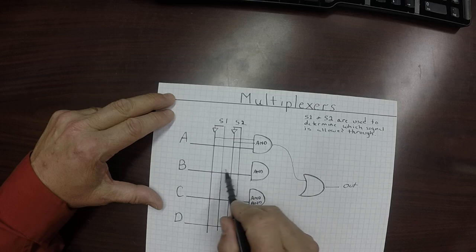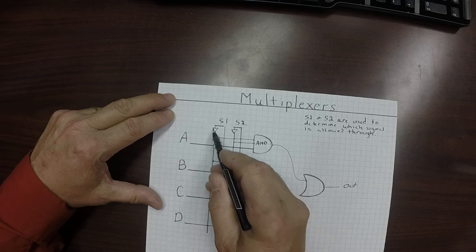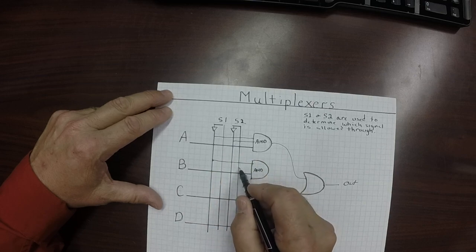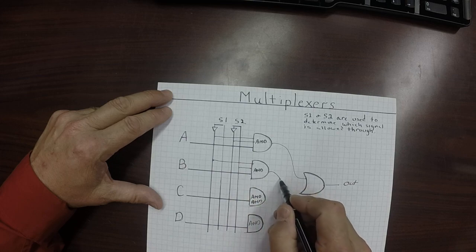If this B selector, I want this one to come out if it's 0-1. So S would be 0, that's the NOT gate up there, and S2 would be 1. So that would make this 1-1 and then this signal would come out.